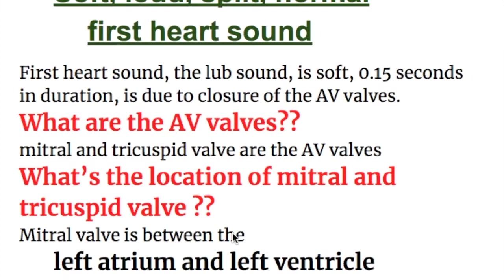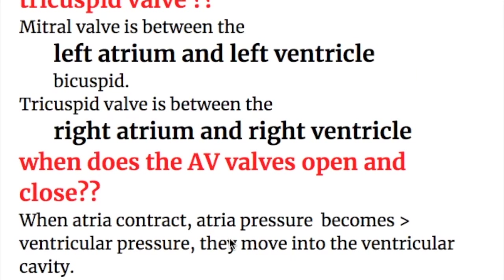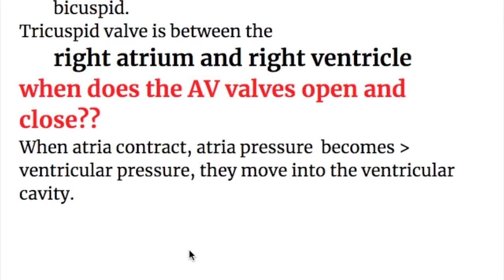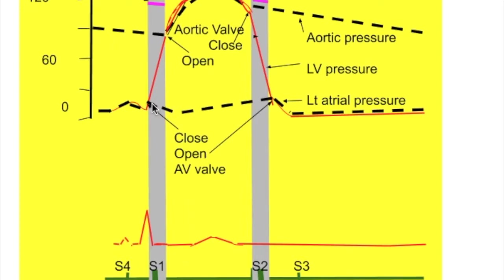The AV valves are the mitral and tricuspid valves. The mitral valve is between the left atrium and left ventricle and is bicuspid, and the tricuspid valve is between the right atrium and right ventricle. When the mitral valve opens, blood flows from the left atrium to the left ventricle, and when the tricuspid valve opens, blood flows from the right atrium to the right ventricle. When the atria contract, atrial pressure becomes more than ventricular pressure and they open the mitral and tricuspid orifices.